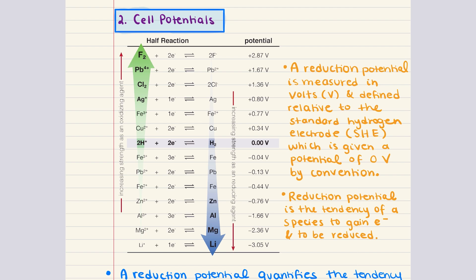The first thing we want to talk about is reduction potentials. A reduction potential is measured in volts and it's defined relative to the standard hydrogen electrode, SHE — that is what that acronym stands for, standard hydrogen electrode. This is conventionally given a potential of zero volts.